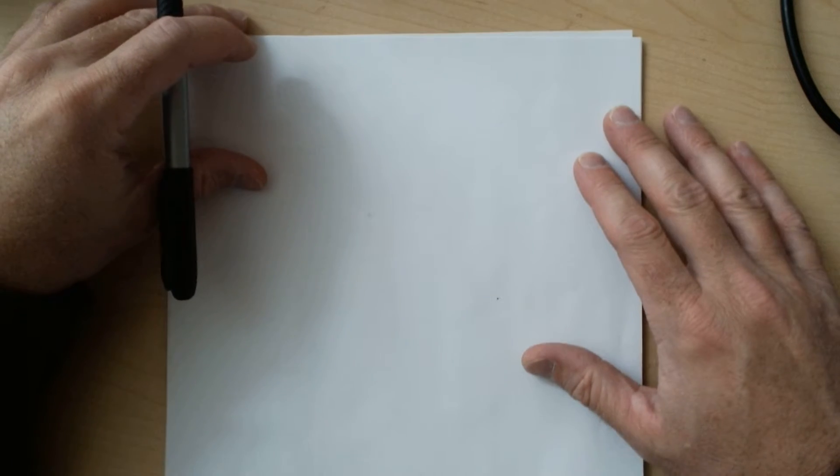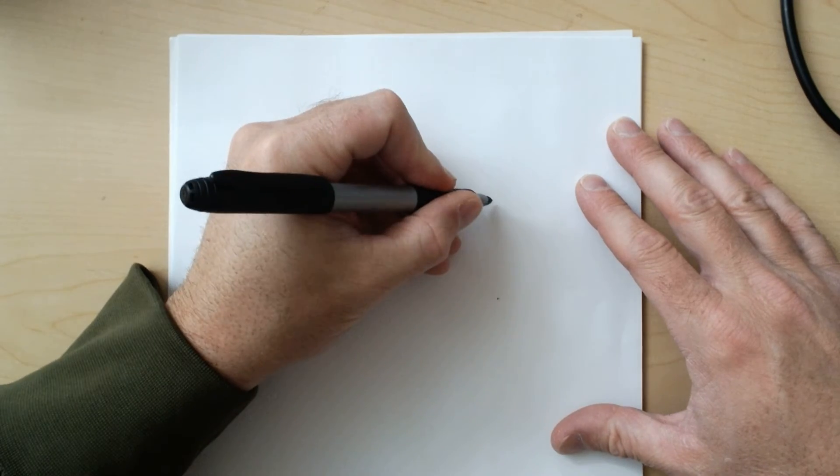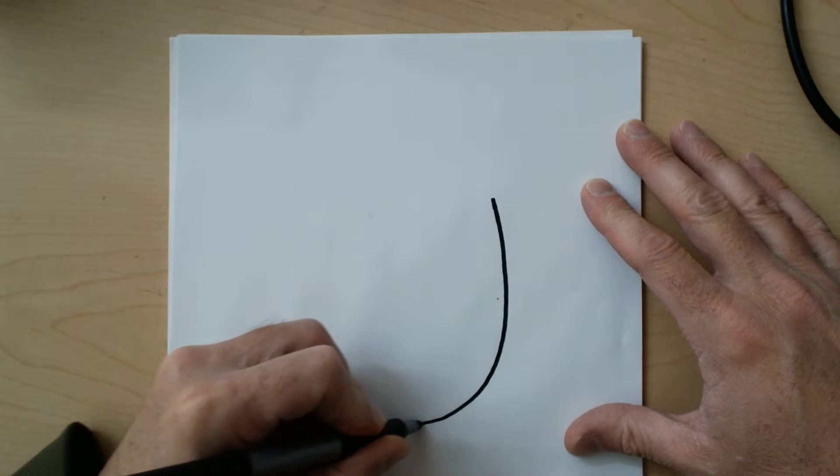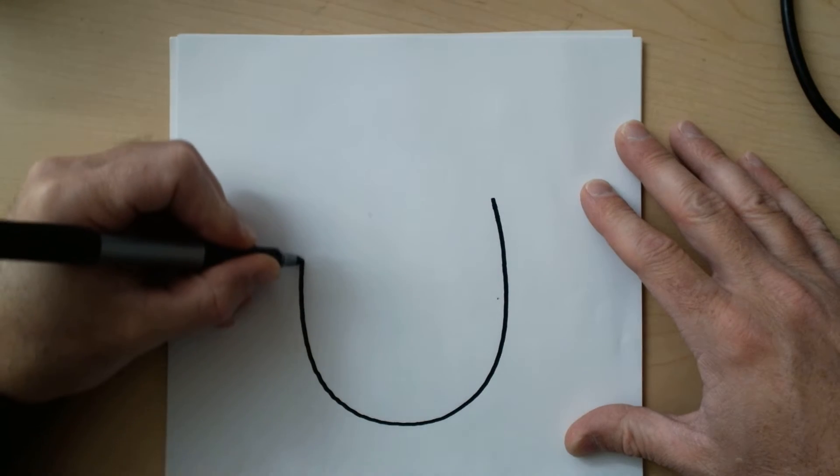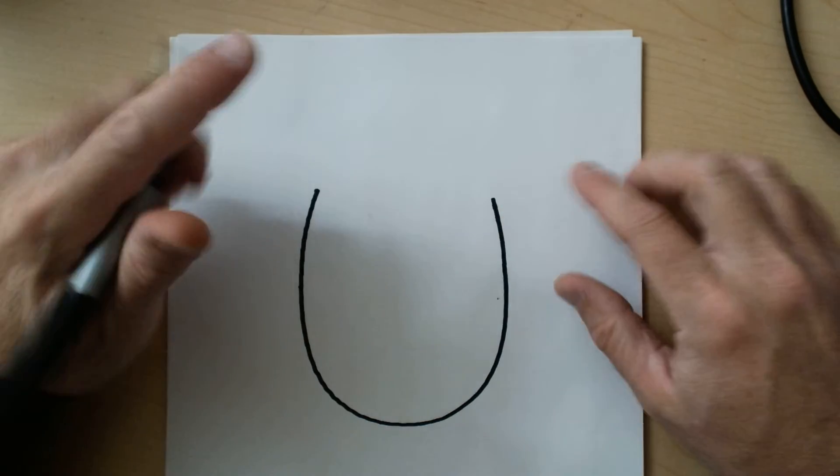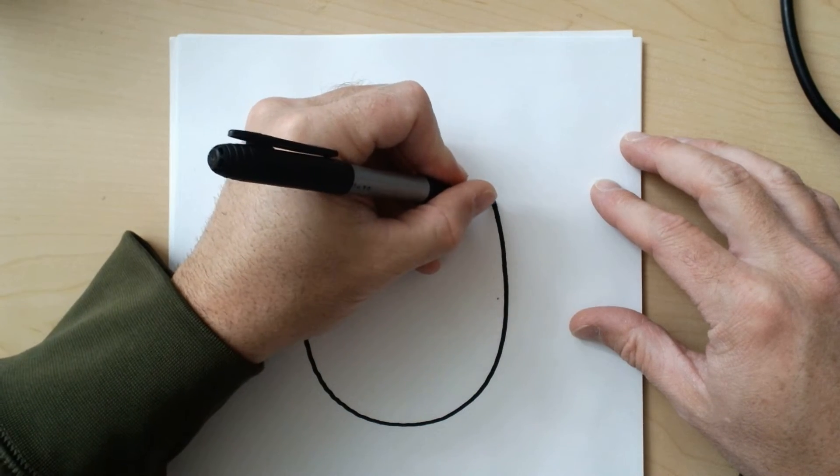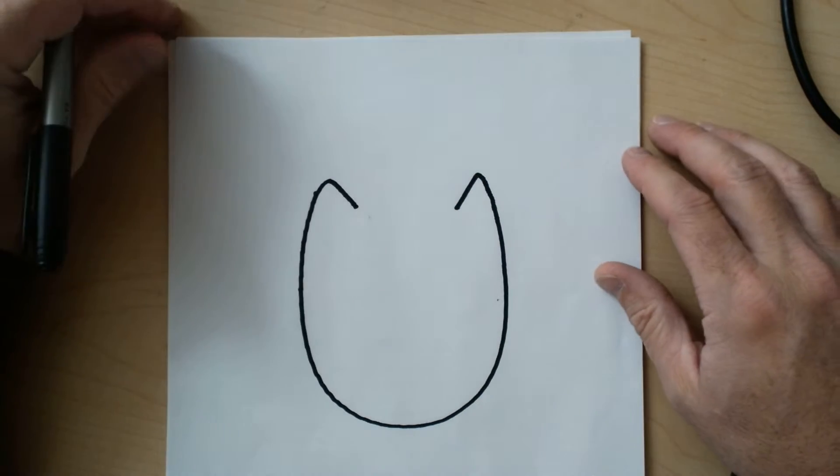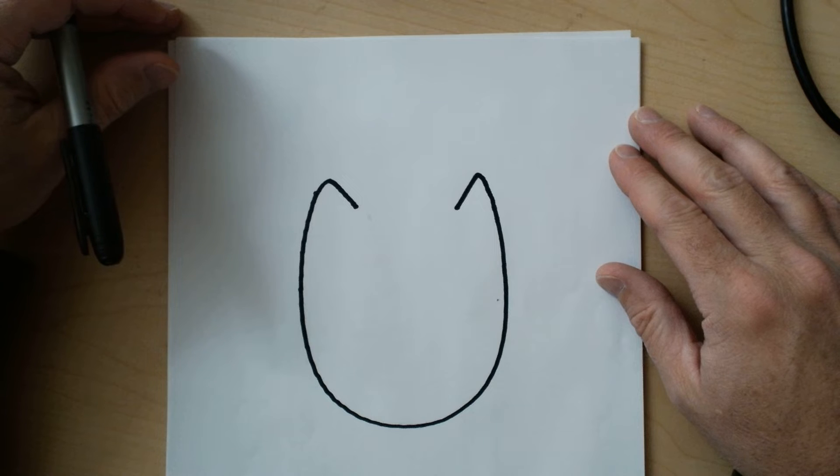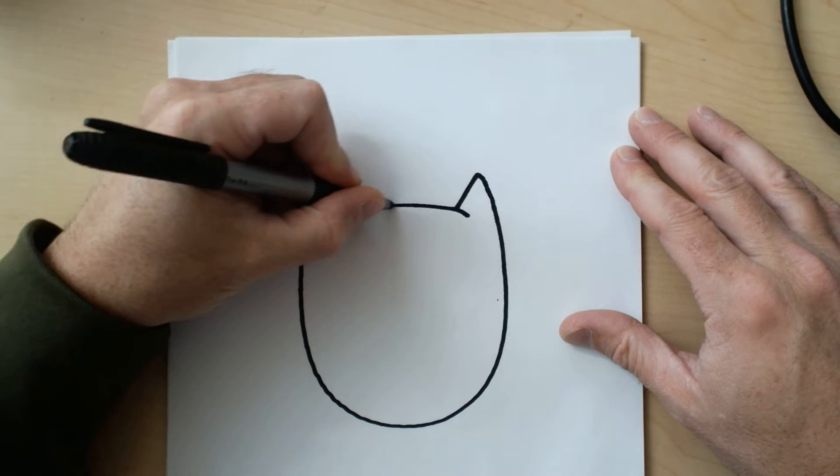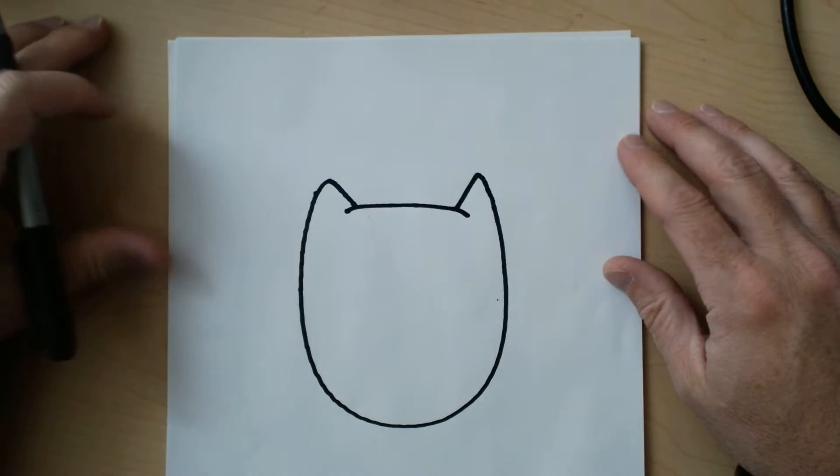Alright guys, here's what we're gonna do. We're gonna start with a big letter U. Then on both tops of this letter U, we're gonna make an ear like that. And we're gonna draw the top of the head with a curved line, just like that.